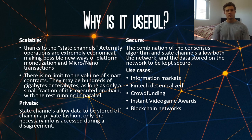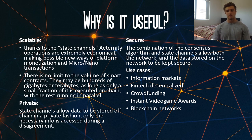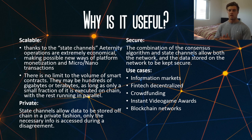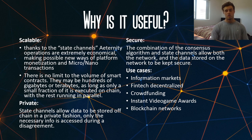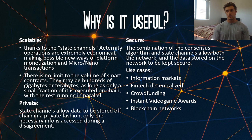The second reason why it's useful is privacy, which is also related to state channels. State channels allow data to be stored off-chain in a private fashion, and if there is a disagreement, the right people will be able to access it. The third reason is that it's secure, due to the combination of consensus algorithms and state channels, allowing both the network and the data stored on it to be kept secure.